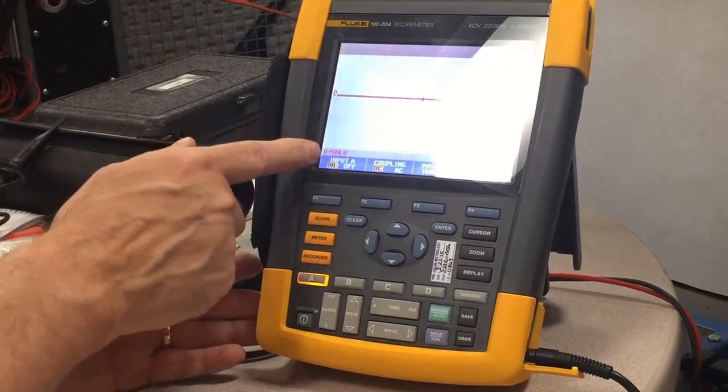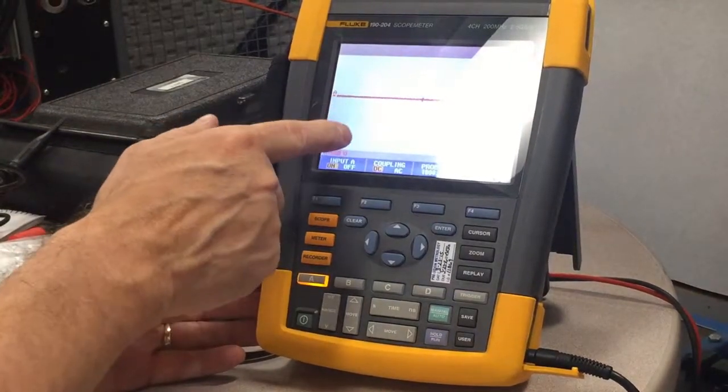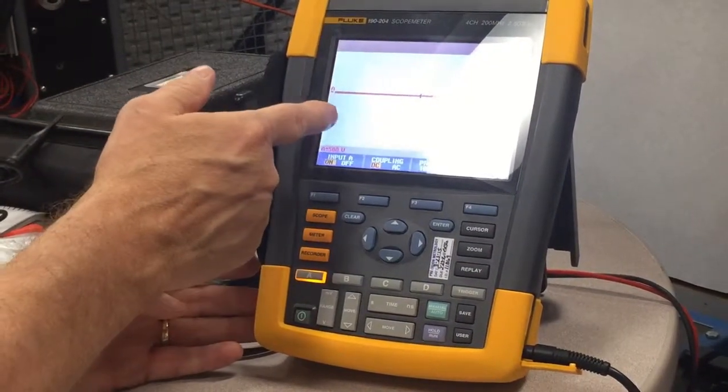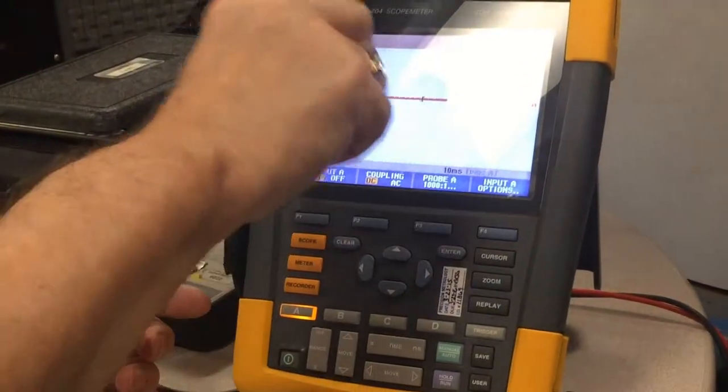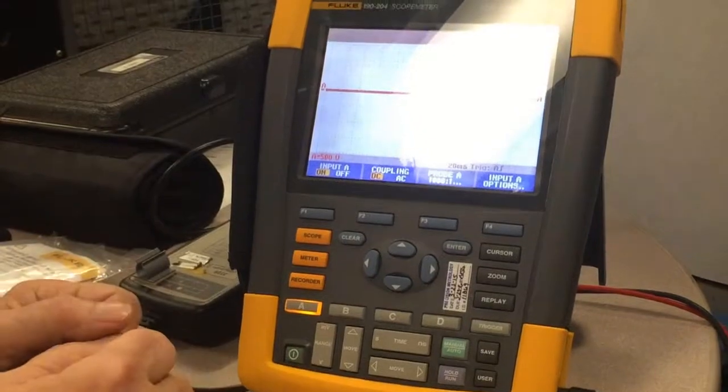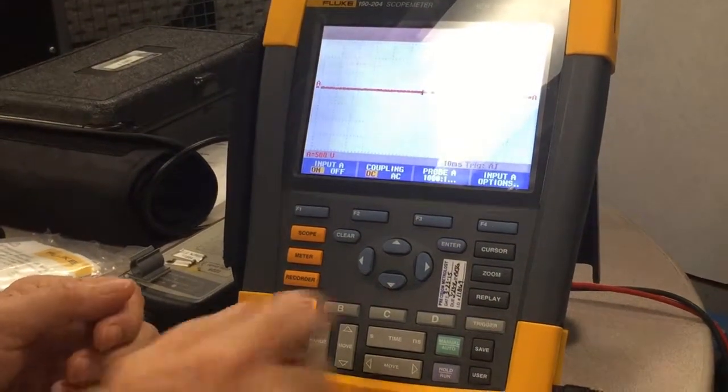At 500 volts per division, we have a total window of 1,000, 2,000, 3,000, 3,500 volts peak to peak, or about 1,700 volts peak.